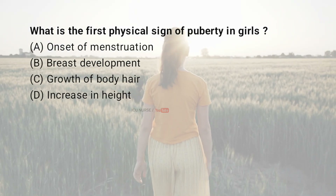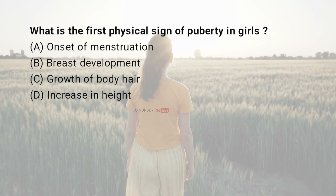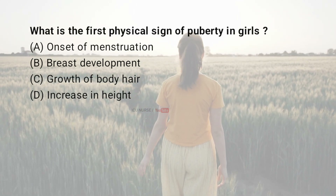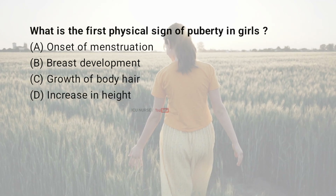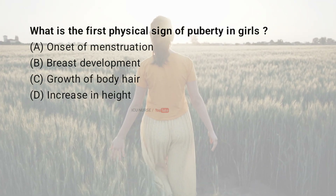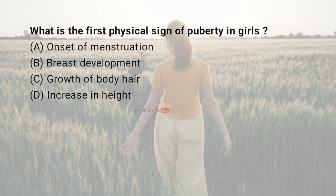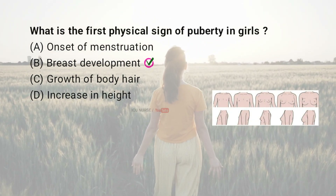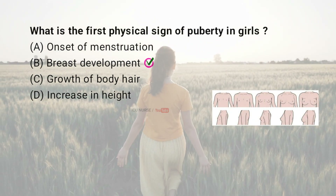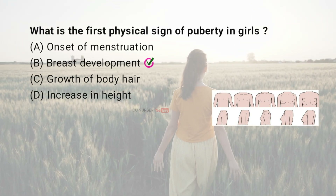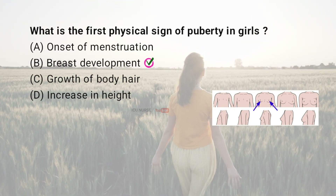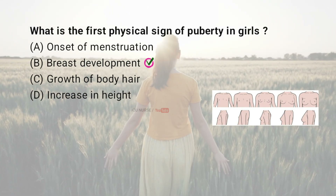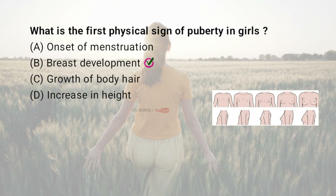What is the first physical sign of puberty in girls? A: Onset of menstruation, B: Breast development, C: Growth of body hair, D: Increase in height. The correct answer is B: Breast development. The first physical sign of puberty in girls is usually breast development, which typically begins between the ages of 8 and 13.